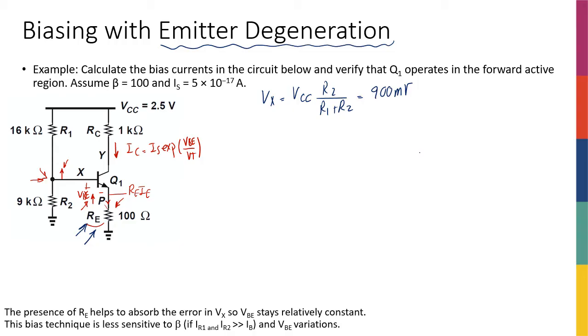Now I have to make a guess about VBE because I'm going to come back to this guess and change it if I have to. So I'm going to start with this initial value for VBE equal to 800 millivolts. For that, I can say that the emitter, the VP that is shown, the point P or node P that is shown here in the circuit, is going to be equal to 900 minus 800 millivolts, so it's going to be 100 millivolts.